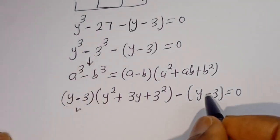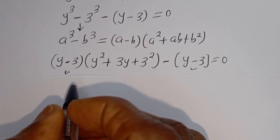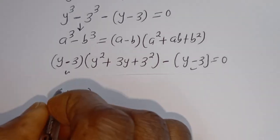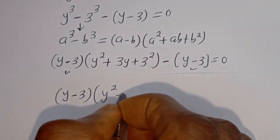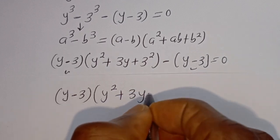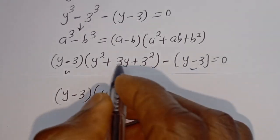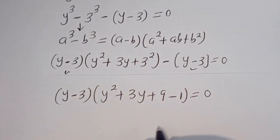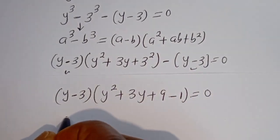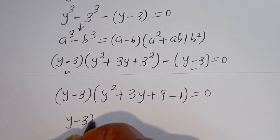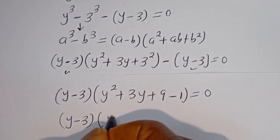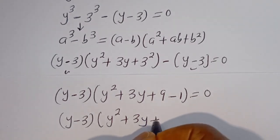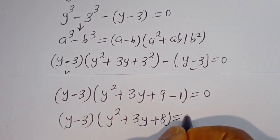Then y minus 3 is common here — let's bring it out. We have y minus 3, bracket y squared plus 3y plus 9, then minus 1, is equal to zero. Then we have y minus 3, bracket y squared plus 3y plus 9 minus 1, that will be plus 8, is equal to zero.